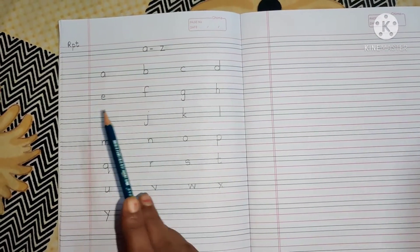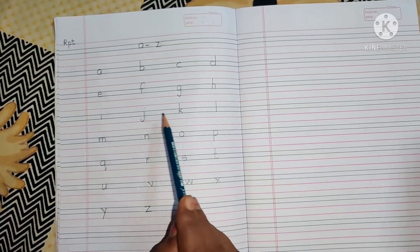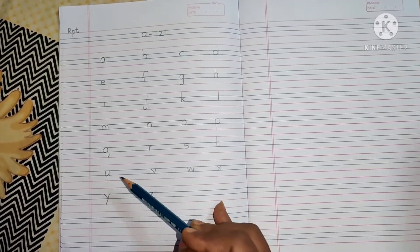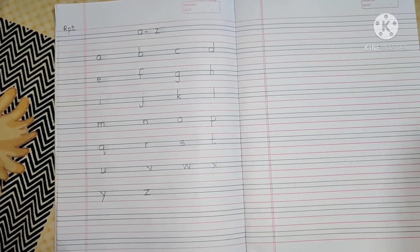A, B, C, D, E, F, G, H, I, J, K, L, M, N, O, P, Q, R, S, T, U, V, W, X, Y, Z. Okay.